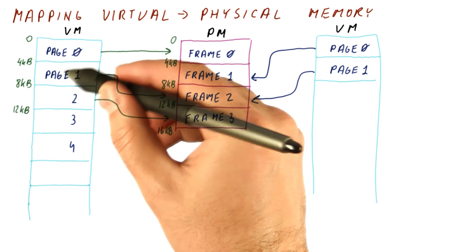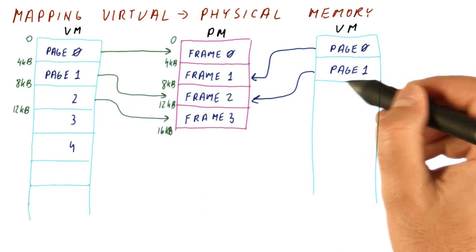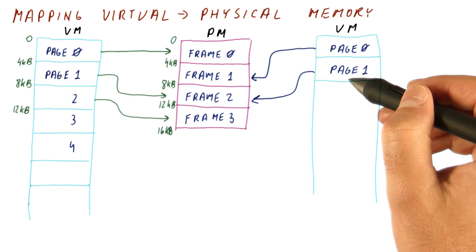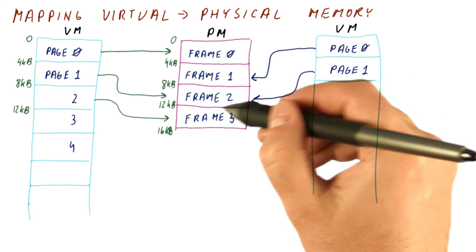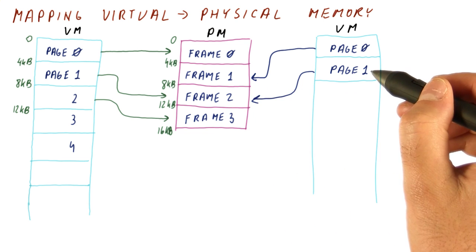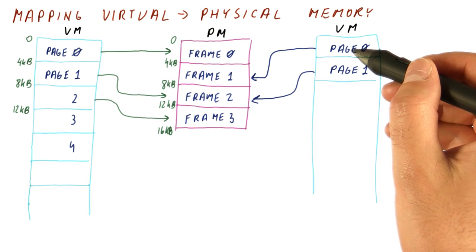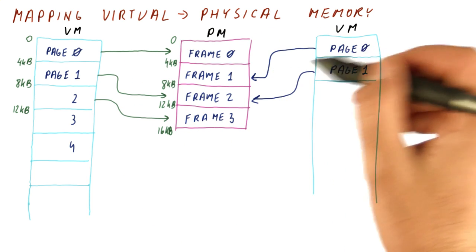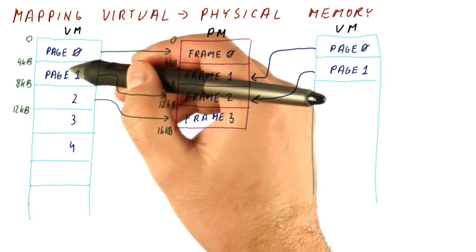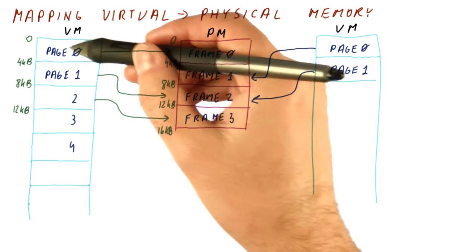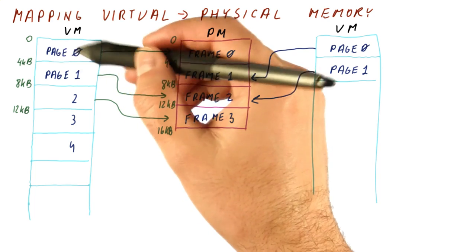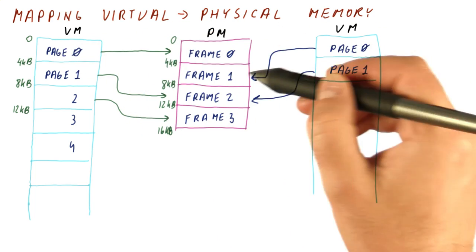And now, when this processor writes to its memory, and this processor reads to the same address, they actually are accessing the same memory location. So this process reads what this process wrote. But for page zero, for example, they have different memory there. So this process sees its own content for page zero, and this process sees its own content for page zero.